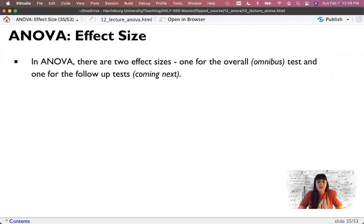So let's talk about that. In ANOVA, there are two effect sizes. One for the overall or omnibus test and one for the follow-up test. Just like in regression, we did R squared for the overall test. And then we did partial R squared for the follow-up test, the coefficients. We have two different ones for two different parts of ANOVA. Because remember, in ANOVA, you get the omnibus result, the F test, that tells you there's a difference somewhere. And then you do some sort of test later to figure out where those differences are.